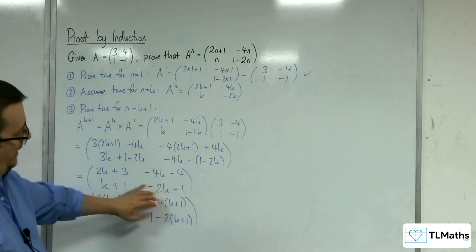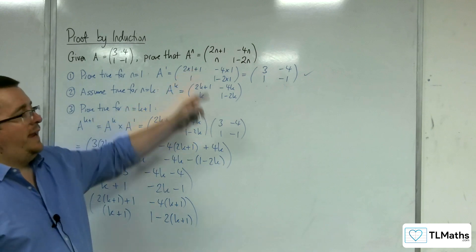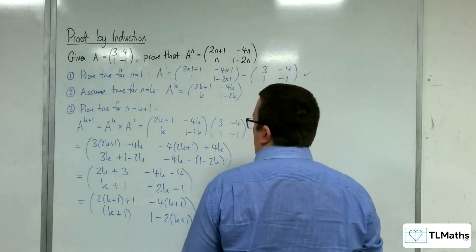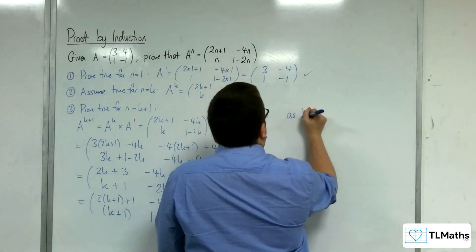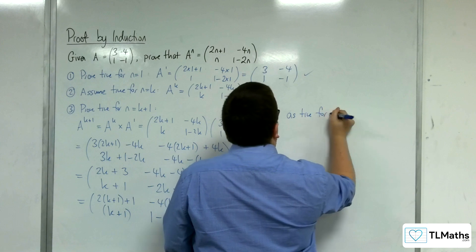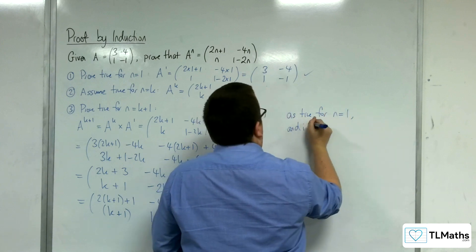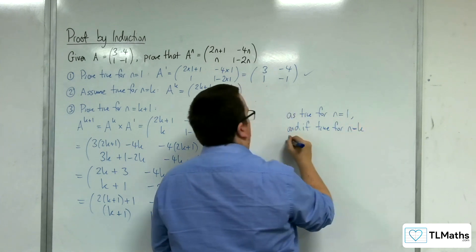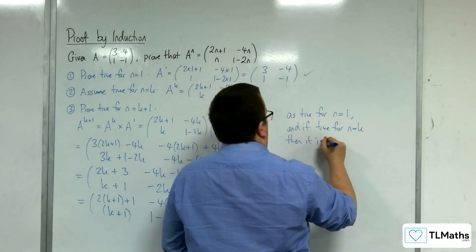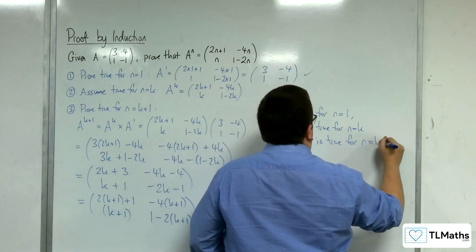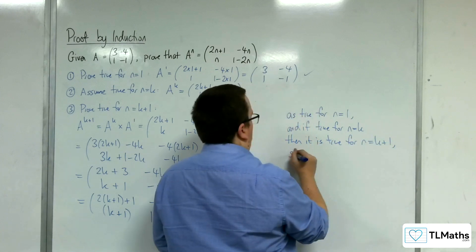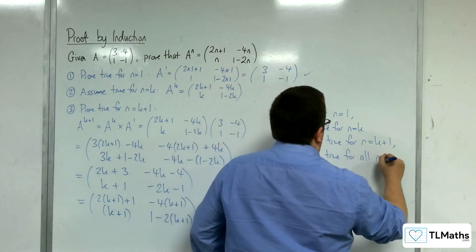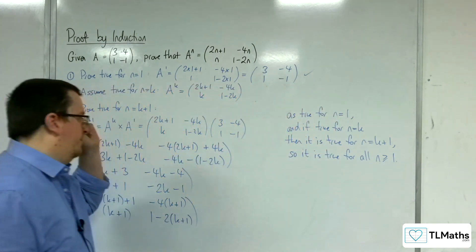And so this is identical to just replacing each of the n's with k plus 1. So we have proved it for n equals k plus 1. So as it's true for n equals 1, and if true for n equals k, then it is true for n equals k plus 1. So it is true for n greater than or equal to 1.